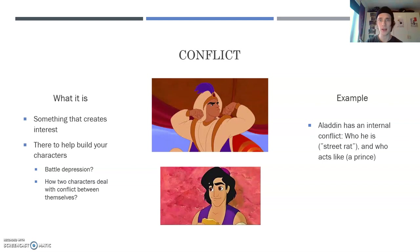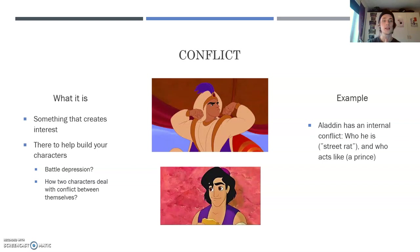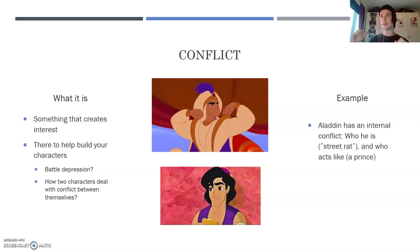Moving on to conflict. A conflict can be between two characters and how those characters resolve it, but the conflict itself creates interest in your story and helps build your characters — for example, how a character battles depression. As demonstrated here, Aladdin has an internal conflict: who is he? Is he a street rat, or is he the prince he acts like? He achieves this persona with help from the Genie. This is a conflict of identity — an identity crisis — that adds depth to his character.